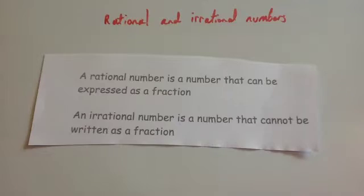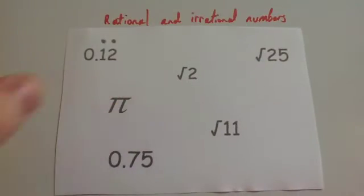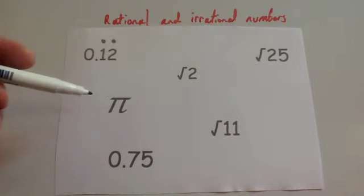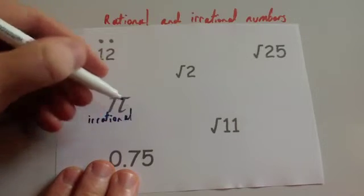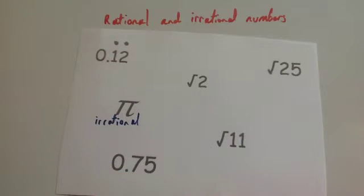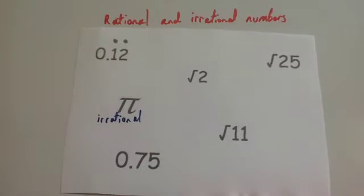So let's have a look at some numbers and see if they're rational or irrational. First of all, let's start with pi. Pi is an irrational number. As you may have learned in your maths lessons, it goes on forever without having a recurring pattern.